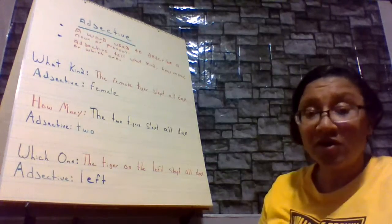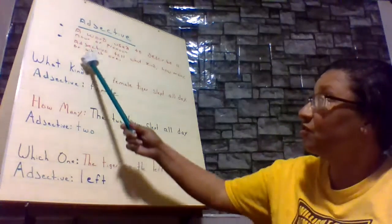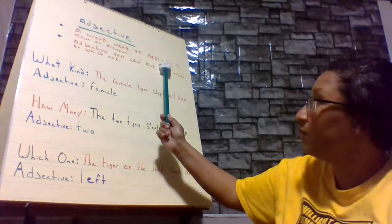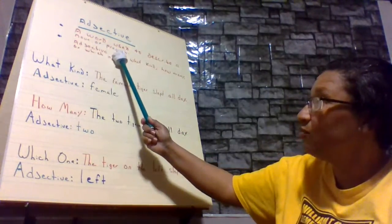So what is an adjective? An adjective is a word used to describe a noun or a pronoun.